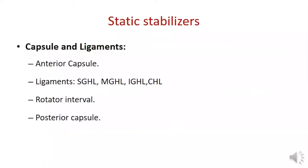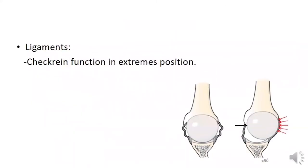The capsule and glenohumeral ligaments provide static stabilization for the joint. The glenohumeral ligaments act as a check rein in which range of motion is allowed in positions that can be controlled by muscle balance, and the ligaments become tense in extreme positions.